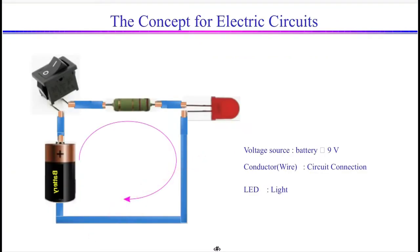Have you ever seen a circuit like this? This circuit has a battery, an LED, a resistor, and a switch. Have you ever seen a resistor before? If you haven't seen it yet, don't worry. We'll also learn about a resistor soon.